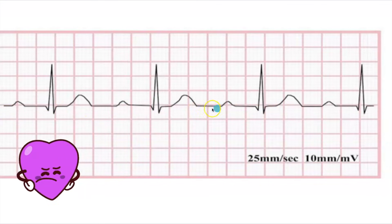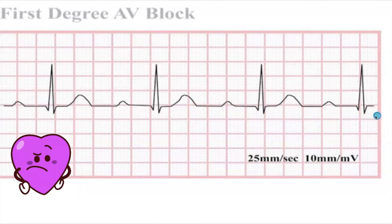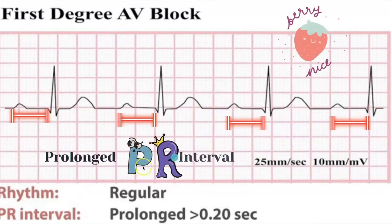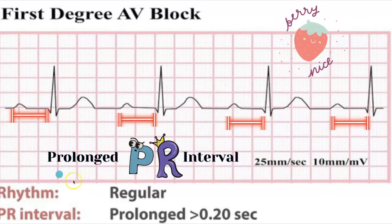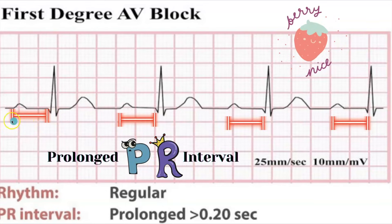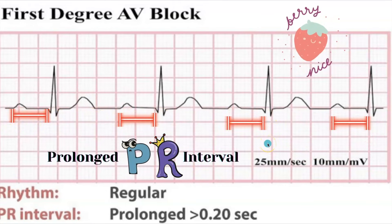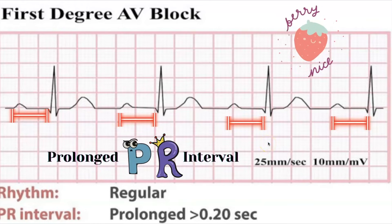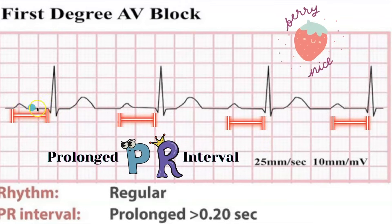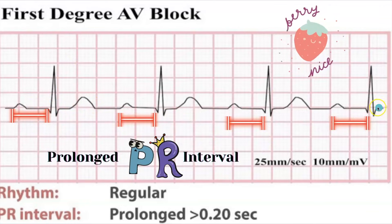This interval here looks regular — it looks like it's about the same throughout. Because it looks consistent, this is actually first degree AV block. You have a prolonged P-to-R interval — it's greater than 0.20 seconds — but there's no block, because every single P wave eventually does get its QRS complex.